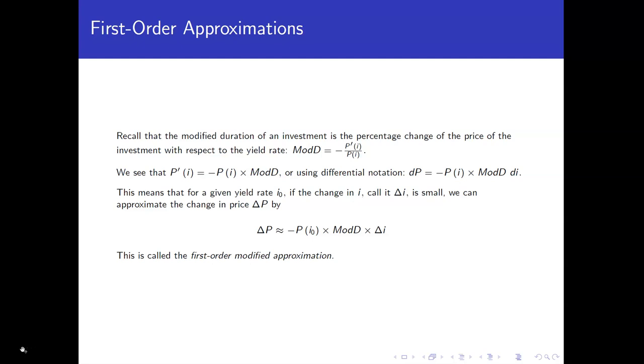So let's recall that the modified duration is a percentage change. So it's the change in the price of the asset for a particular yield rate divided by the price of that asset for that interest rate, that yield rate. And of course, since we know that as the interest rate goes up, the price goes down, we take the negative of that because we would like the modified duration to be a positive number.